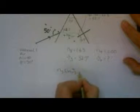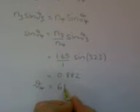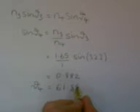Write down the equation we will use: Snell's law. N3 sin theta 3 equals n4 sin theta 4. Sin theta 4 equals n3 divided by n4 times sin theta 3. Substituting the values, the answer is 61.8 or 62 degrees to the nearest whole number.